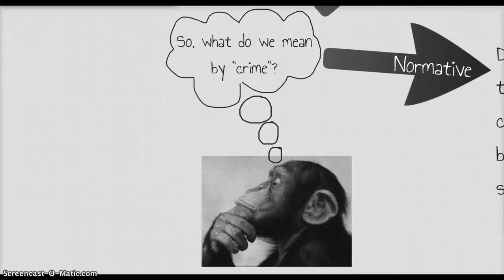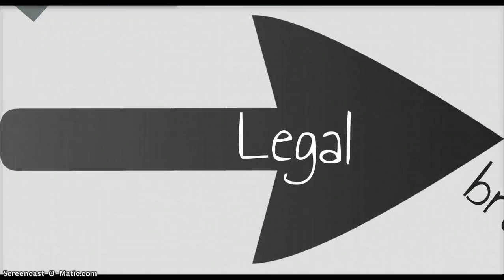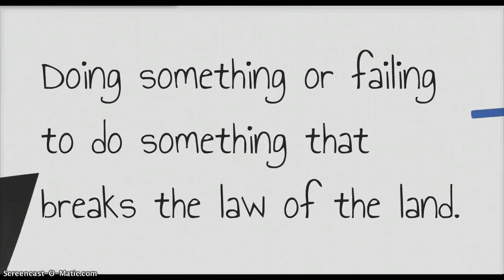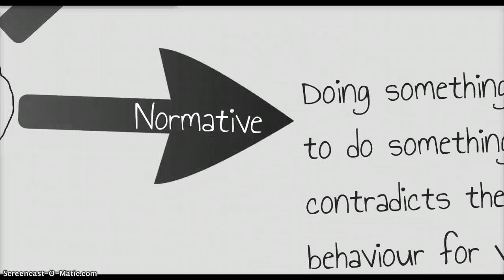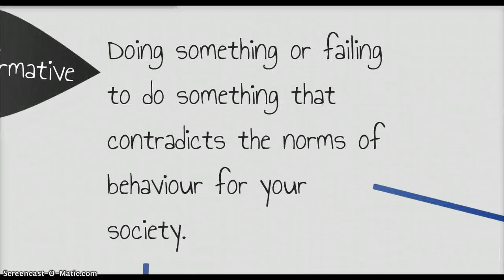So if we're thinking about the definition of crime, what does the word actually mean? We can take two approaches. The first is the legal approach, where we would say a crime is doing something or failing to do something that breaks the law of the land. Alternatively, we could take a more normative approach, and say that a crime is doing something or failing to do something that contradicts the norms of behaviour for our society.